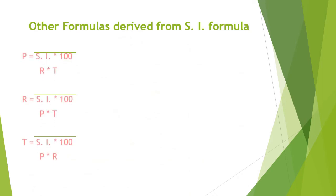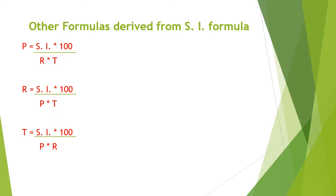From the simple interest formula, we can derive other formulas. If simple interest, rate, and time are given, we can find Principal using the first derived formula. Similarly, if simple interest, principal, and time are known, we can find Rate of Interest. And in the same way, we can also find Time. Don't complicate it — just remember SI = (P × R × T) / 100, and from that single formula, you can derive all three others to find whichever unknown the question asks for.